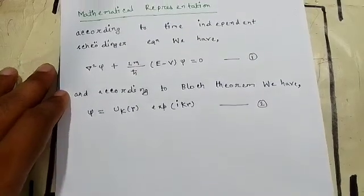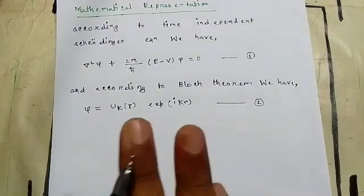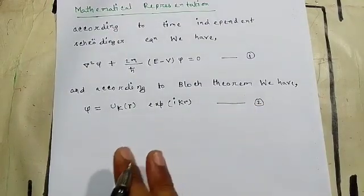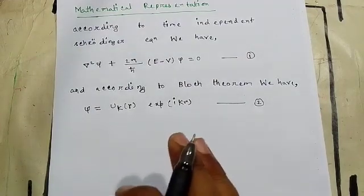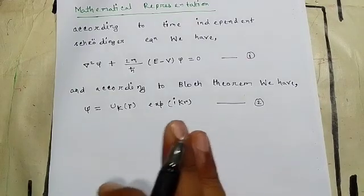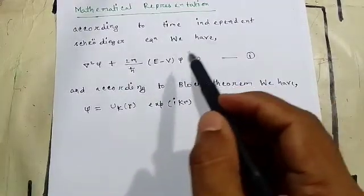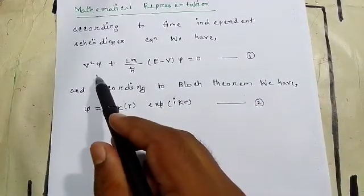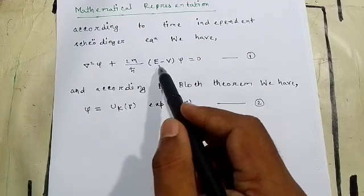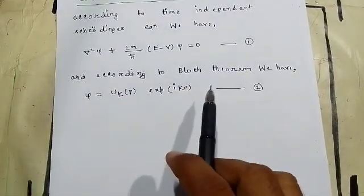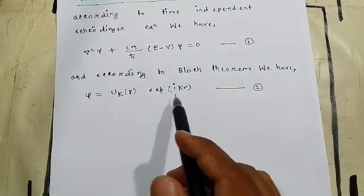Now I will discuss the mathematical representation of the Wigner-Seitz cellular method. To find the mathematical relations, I use two equations: the first is the time-independent Schrödinger equation — del²ψ + (2m/ħ²)(E − V)ψ = 0 — and the second is Bloch's theorem, that is ψ = u(k,r) · e^(ikr).